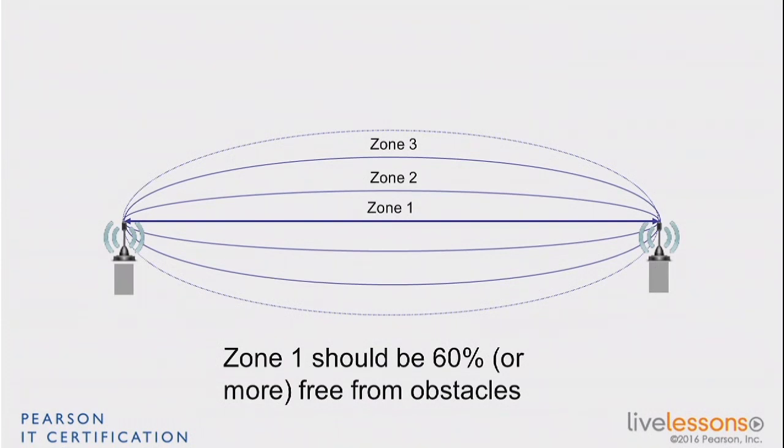But for CCNA, remember, zone 1 is important, and 60% free from obstacles is a requirement for quality signal outdoor. Indoor, it doesn't matter too much.